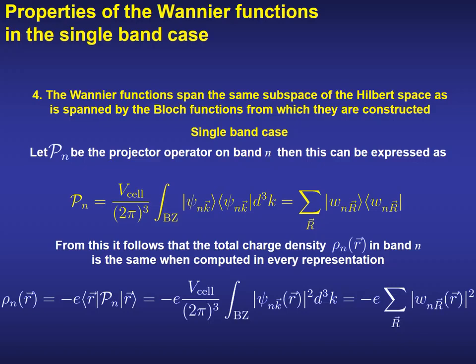The fourth property is that the Wannier functions span the same subspace of the Hilbert space as is spanned by the Bloch functions from which they are constructed. Let us put an example here. If we define the projector operator on a given band as written in the first equation, then we can represent the charge density in real space associated with this band in the basis of Bloch functions, as the sum of the square of the modulus of the Bloch functions, or alternatively, as the sum of the square of the Wannier functions at that given point in space. Both representations are exactly equal.